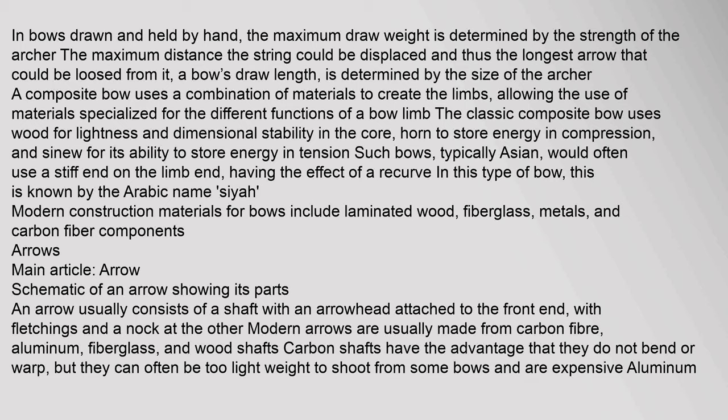Modern construction materials for bows include laminated wood, fiberglass, metals, and carbon fiber components. An arrow usually consists of a shaft with an arrowhead attached to the front end, with fletchings and a nock at the other. Modern arrows are usually made from carbon fiber, aluminum, fiberglass, and wood shafts. Carbon shafts have the advantage that they do not bend or warp, but they can often be too lightweight to shoot from some bows and are expensive.